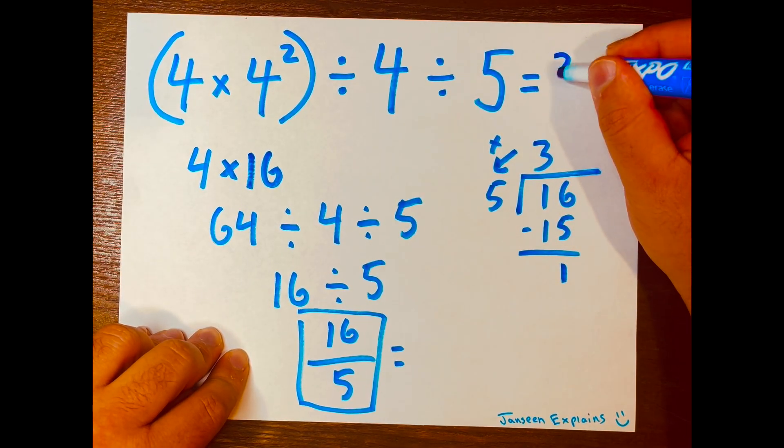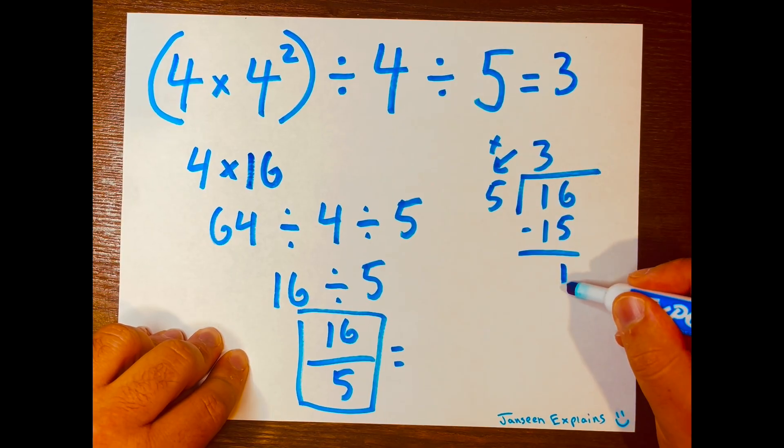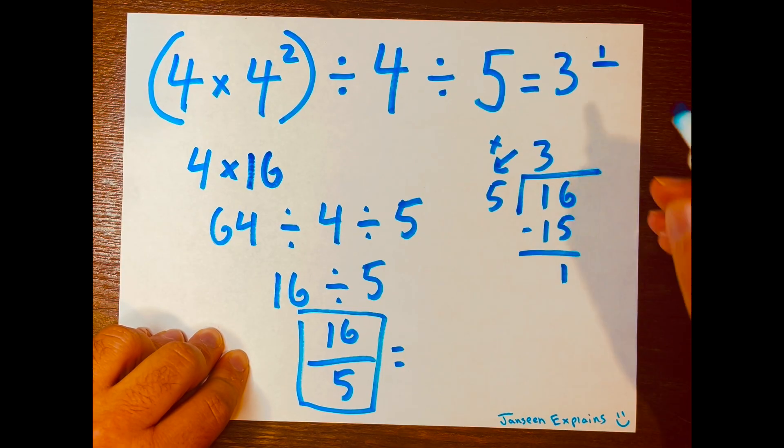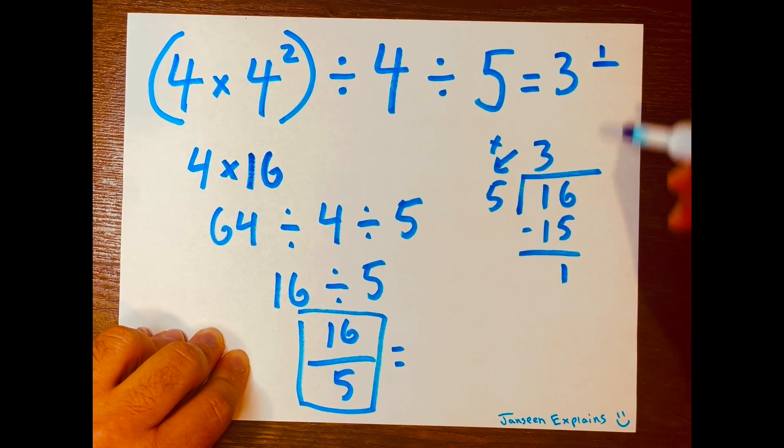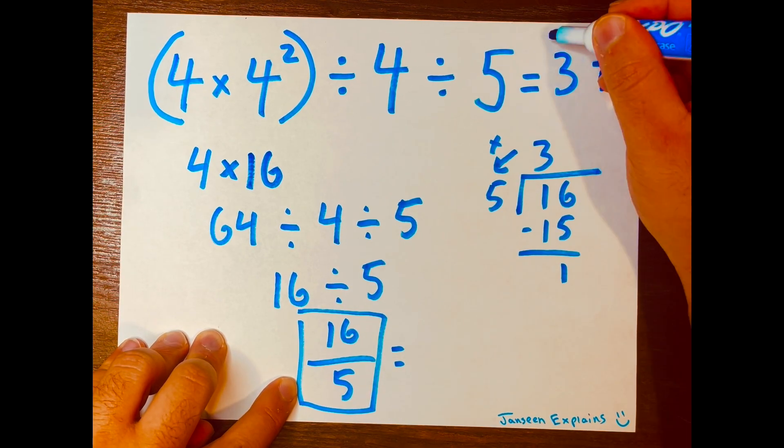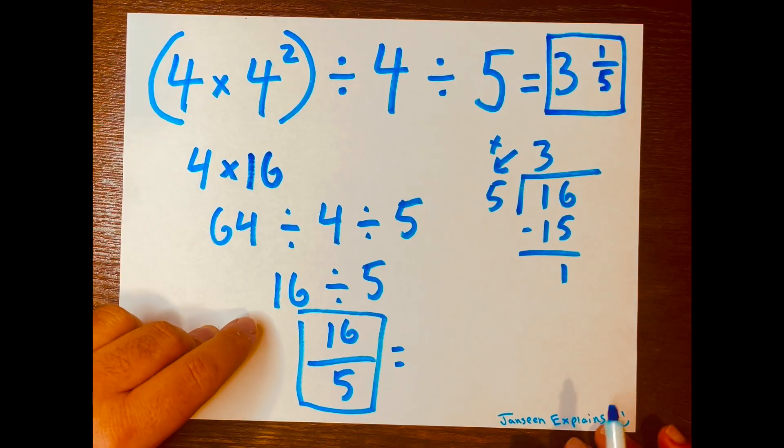So your mixed number will be three as the whole number. One will be your top number of the fraction, and that'll be the remainder. And then the five, your denominator. So your answer is three one-fifth.